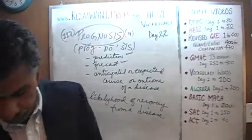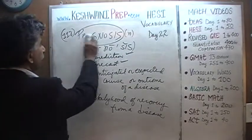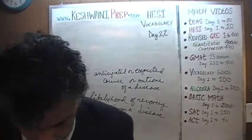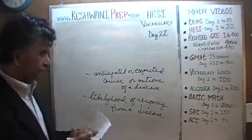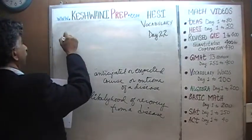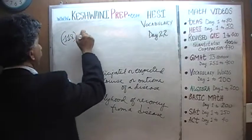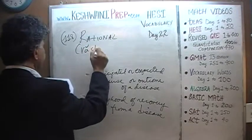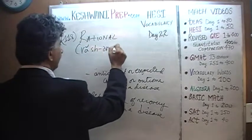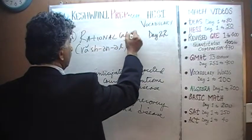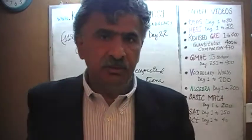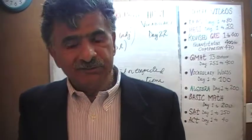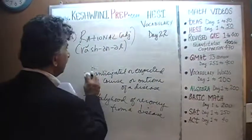Let's carry on. Word 118 — this is a very simple word, but as you know, no matter how simple the pronunciation might be, we always make a point of writing down the pronunciation phonetically. The word is rational. What does it mean to be rational? It is an adjective. What does it mean when we describe something as being rational?